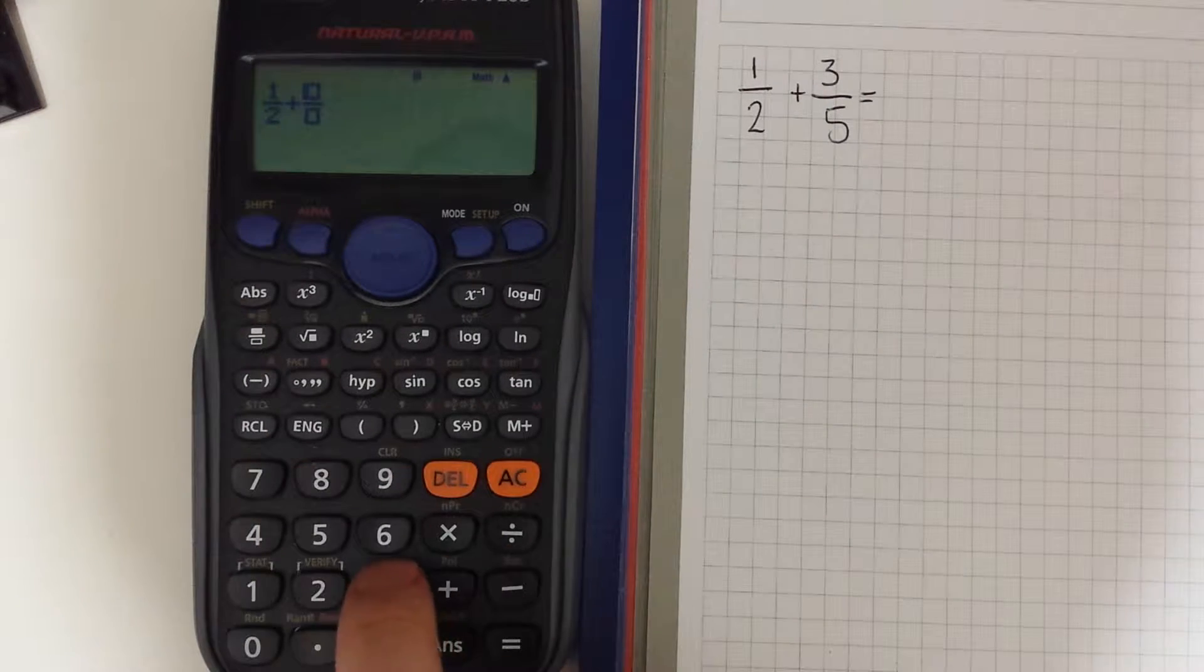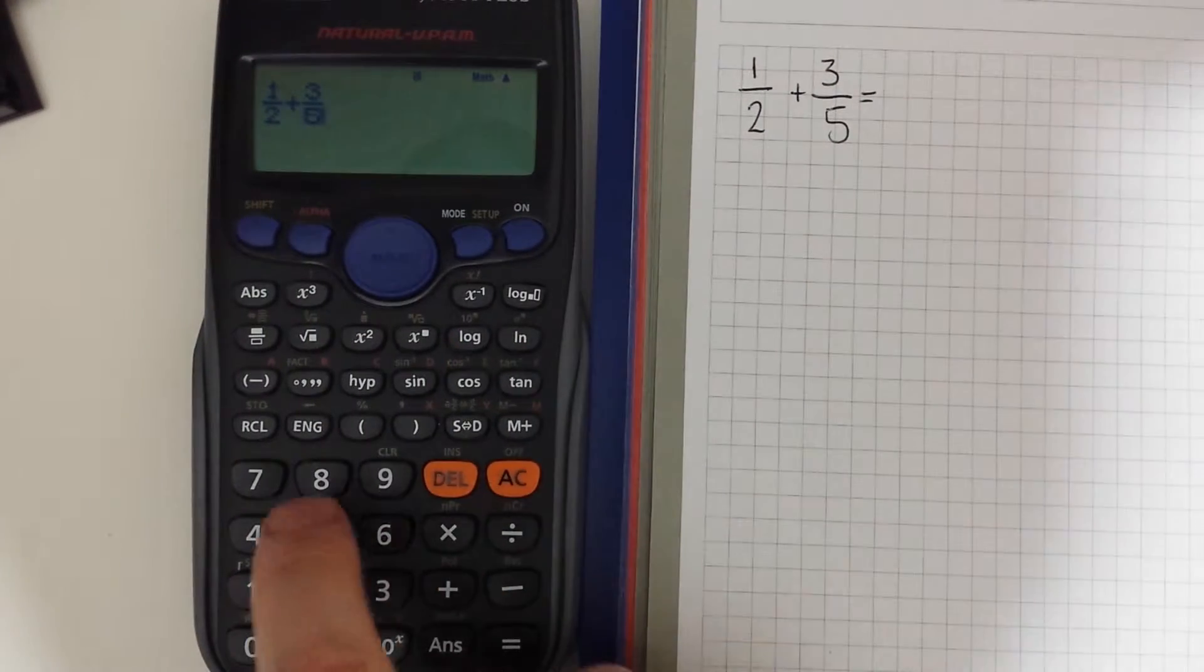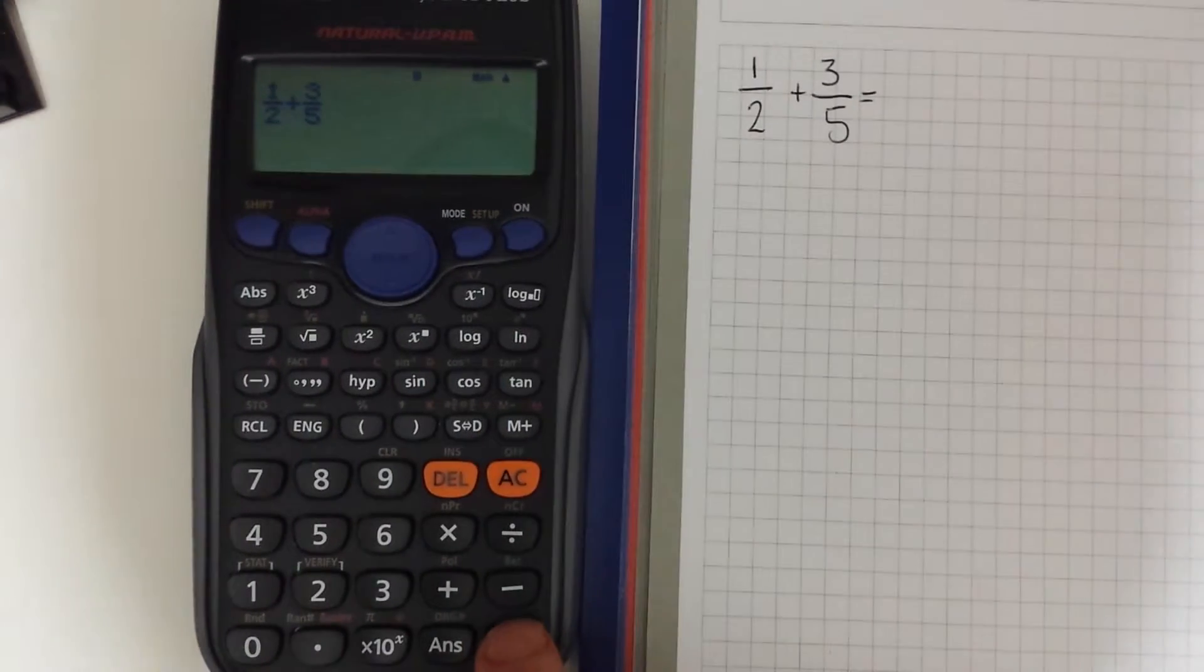So fraction key 3, navigate to the denominator 5 and then we can press equals.